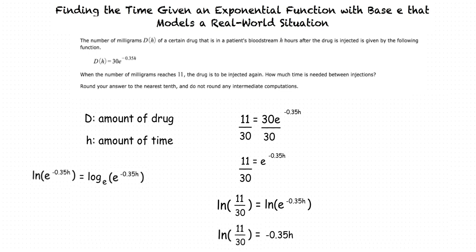Where did the E go on the right side? Remember that the natural logarithm is the same as a logarithm with a base of E, so this expression is the same as log base E of E to the negative 0.35H. A logarithm is equal to whatever exponent you must raise the base to in order to equal the value inside the logarithm. In our example, what value do we have to raise E to in order to get E to the negative 0.35H? It's negative 0.35H. So log base E of E to the negative 0.35H equals negative 0.35H, and we can replace that in our equation.